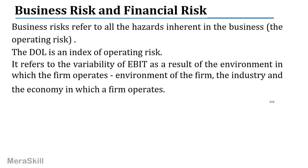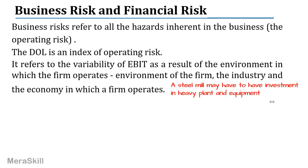How does the EBIT change as a result of the environment in which the firm operates — the firm, the industry, or the economy? For example, a steel mill has to have investment in plant and electrical equipment, so they will have certain fixed costs. The depreciation and plant machinery could result in a lot of fixed costs — something over which we may have more control. This is a reflection and indicator partly of the business risk.